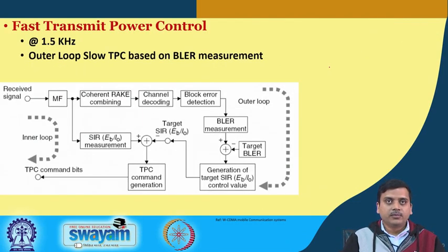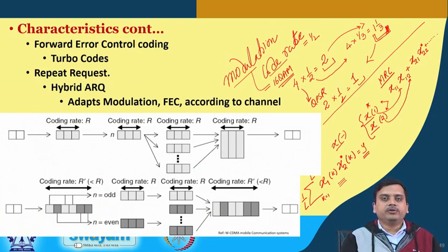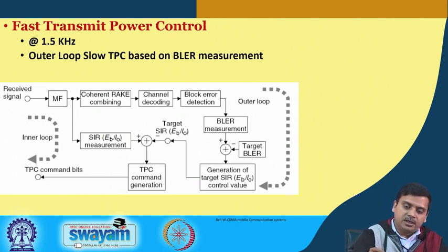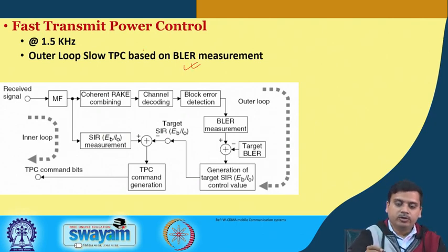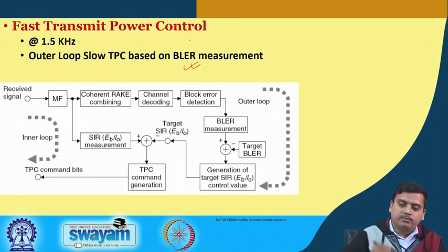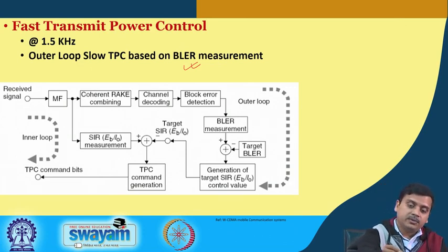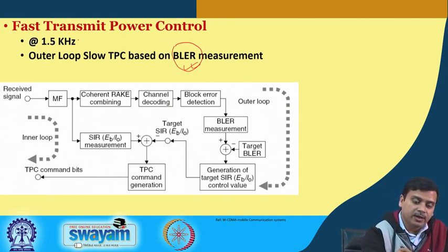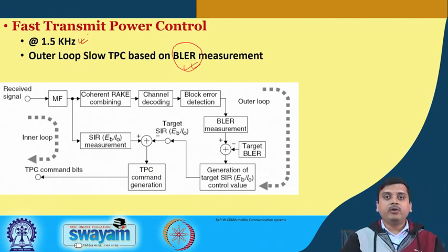These are some of the important mechanisms introduced in the third generation system. There was also a fast power control mechanism operating at 1.5 kHz, and an outer loop slow TPC based on turbo coded modulation and block error rate measurement. When sending packets, the block or packet error rate is checked and thresholds for link adaptation are adjusted, while fast power control operates in parallel.